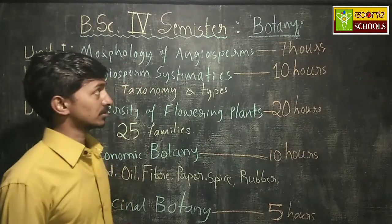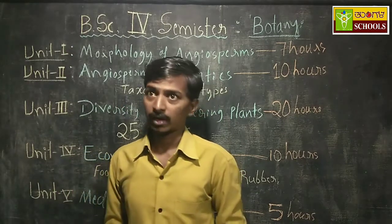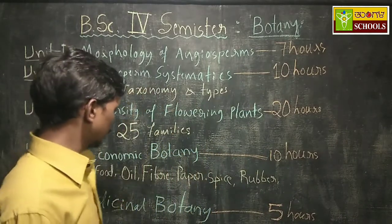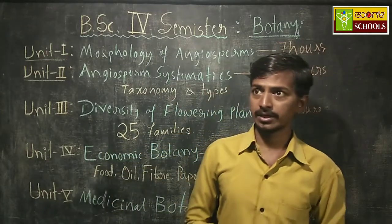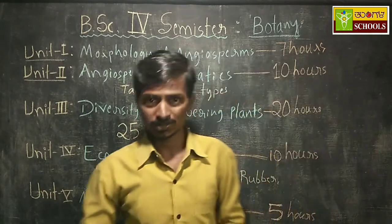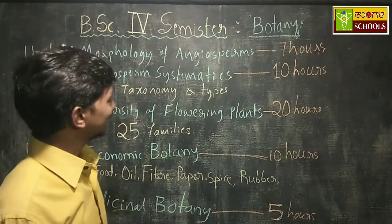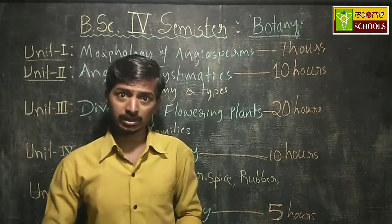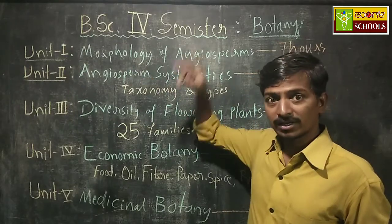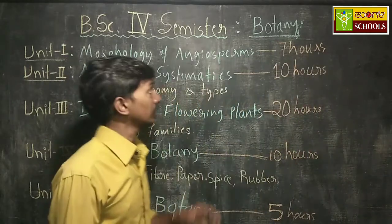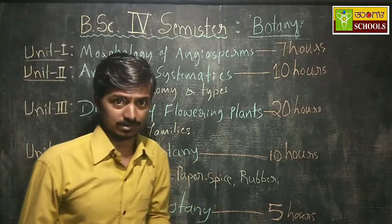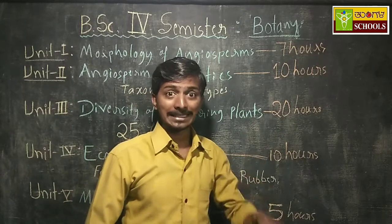Today onwards we will start learning botany. In our fourth semester we have four or five major units. Each unit is not entirely new to you — you have already learned all of them in your lower classes. We have five major units and each unit has some concepts to learn, which we should study in depth. In lower classes we learned only superficial things.